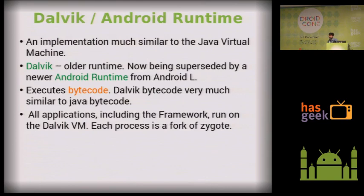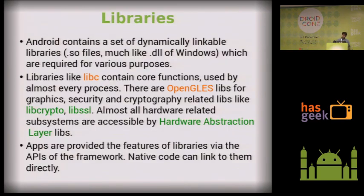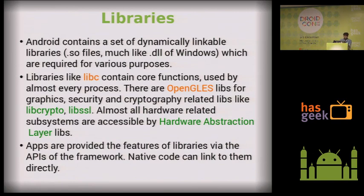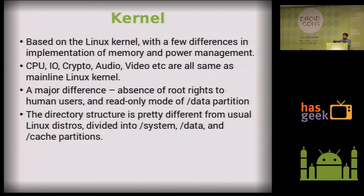Just below the frameworks is the runtime. Until now it was Dalvik, which was very much like the Java Virtual Machine. Now Android is shifting to a newer runtime which Google says is more native. Below that are the libraries, which can be of various types — encryption libraries, and libraries that handle hardware called the HAL, Hardware Abstraction Layer, which allow you as the developer to access the GPU, sensors, and the screen.